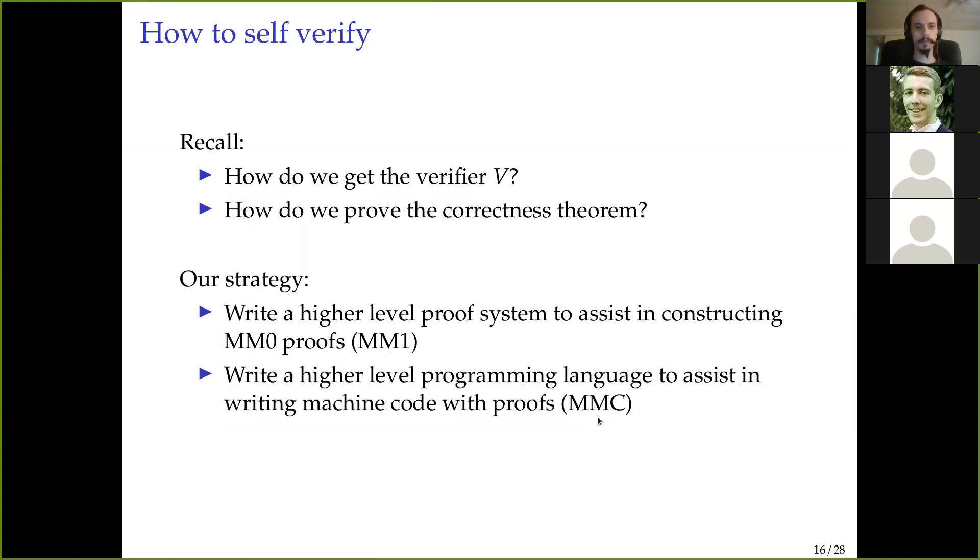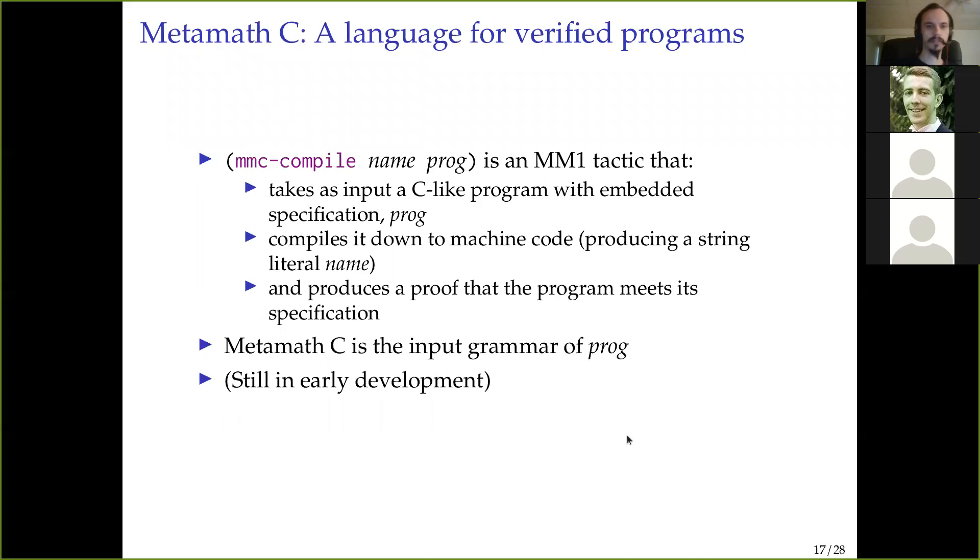And this provides syntax highlighting, live error diagnostics, and so on, using the language server protocol. Okay, so recall that we were trying to get these two parts. We needed the verifier and we needed the correctness theorem. In order to prove the correctness theorem, we built this proof system, this proof assistant for MM0. But now, let's look at how to get the verifier, the actual code, and also to prove facts about that at the same time. So that is what MetaMath C is about.